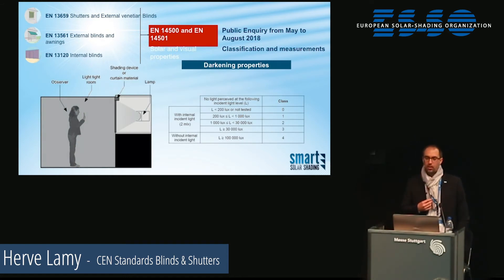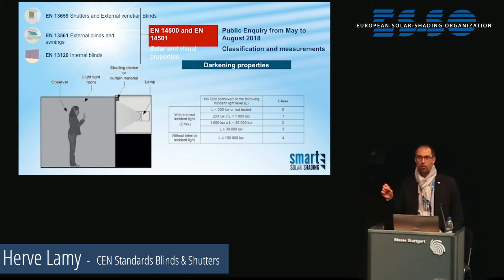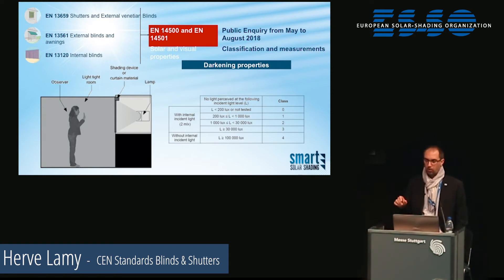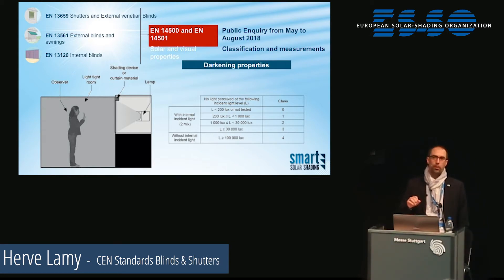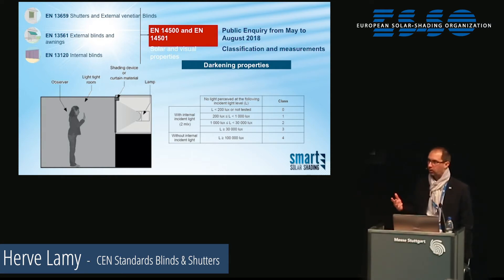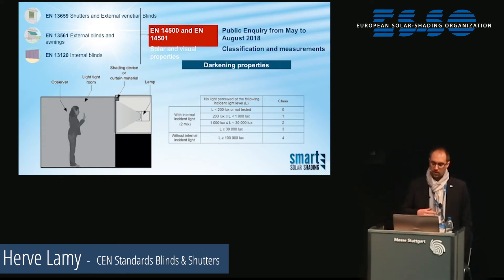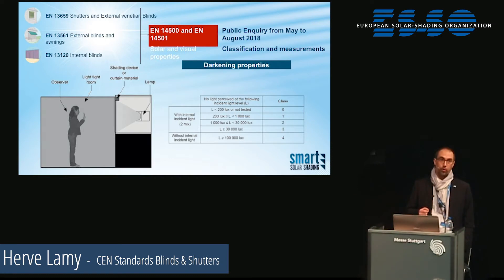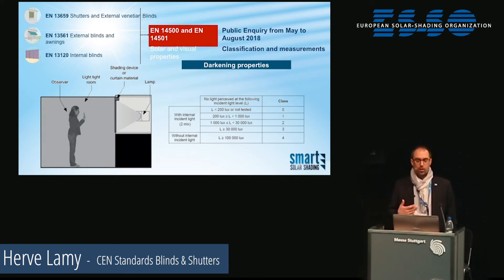The last set of standards under revision are about solar and visual properties. I will give you an overview of what we changed in the classification, and Tillman Kuhl will come back later with measurements and technical details. The first characteristic being changed is about darkening properties — what we used to call blackout products. We changed the terminology to avoid problems: there were issues in Germany with the term 'blackout' being used for products that were not blackout according to the standard.